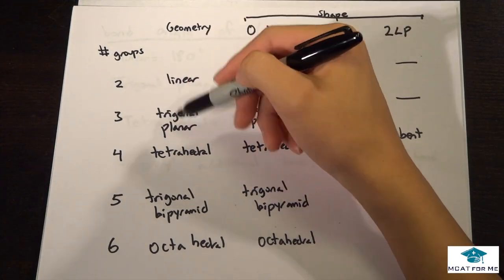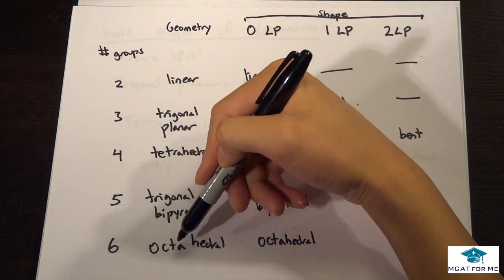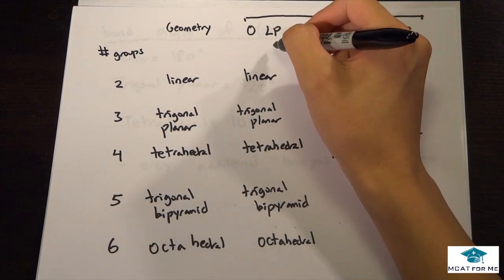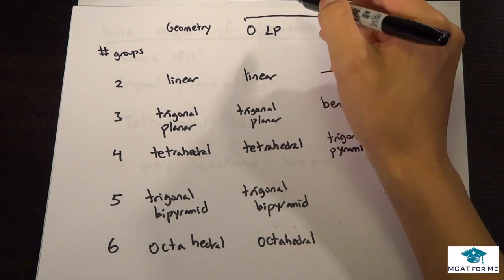So let's see. Something that has two groups will have a geometry that's linear. Three is trigonal planar. And we saw all these rest before, so I'm not going to go too much into that.